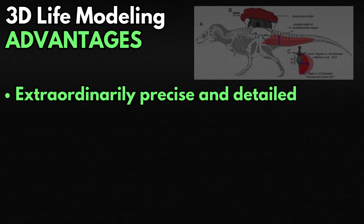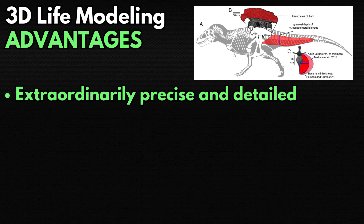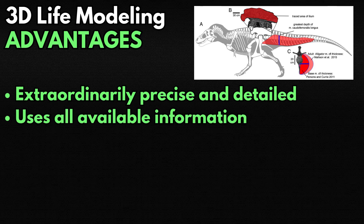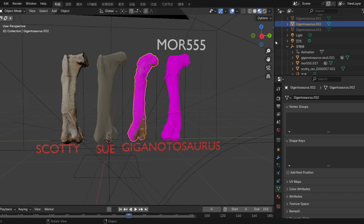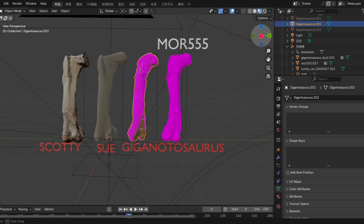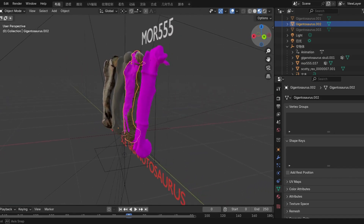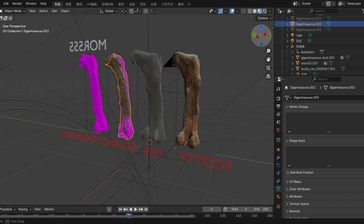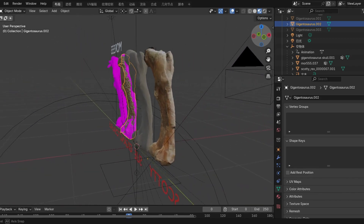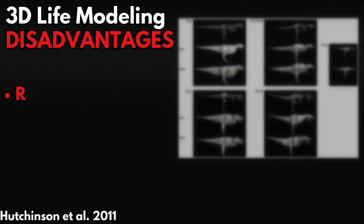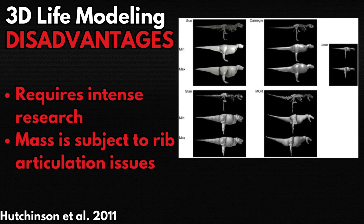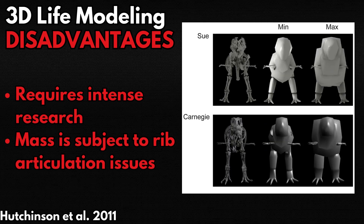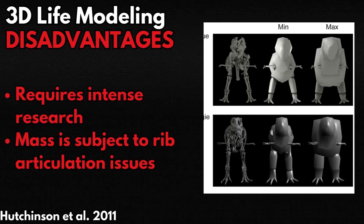3D modeling is the most detailed and precise method on this list by a mile. For taxa with complete skeletons with preserved muscle scars and the position of ribs and gastralia preserved, it is the gold standard. Scanning the material allows you to view it from multiple angles and understand how papers arrive at different measurements for the same bone. The downsides are that it takes a very long time and an extreme amount of detailed research, and final mass is very subject to the articulation of the ribs, given that the torso contributes the most to an animal's weight.